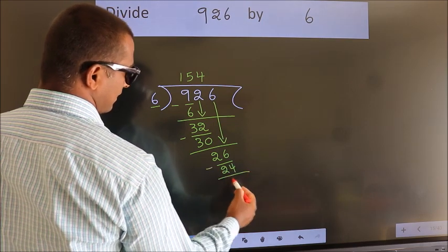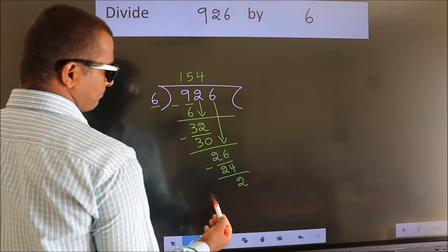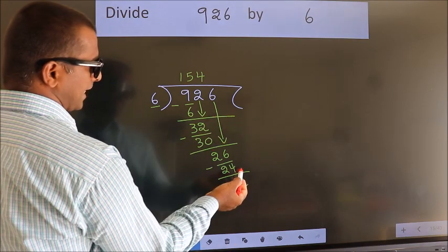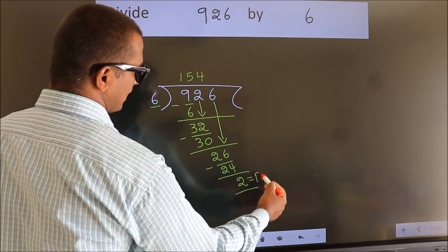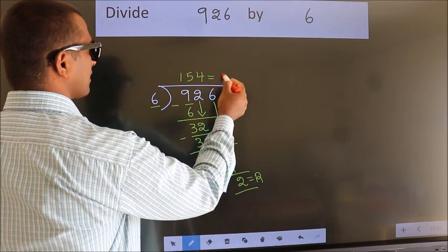Now, we subtract. We get 2. No more numbers to bring down. So, we stop here. This is our remainder. This is our quotient.